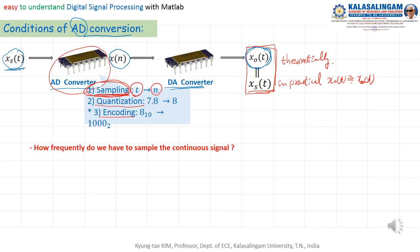Then for sampling: sampling means converting continuous time X of t to X of n. For this, we need a sampling frequency. So how frequently do we have to sample the continuous signal? This is a key point.